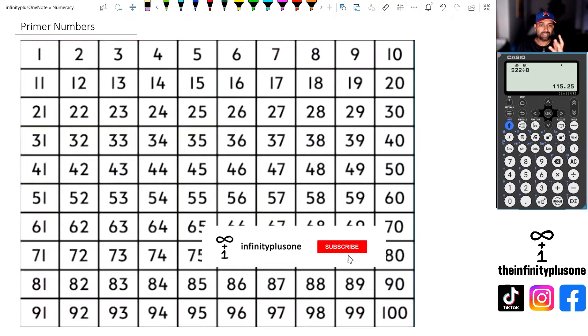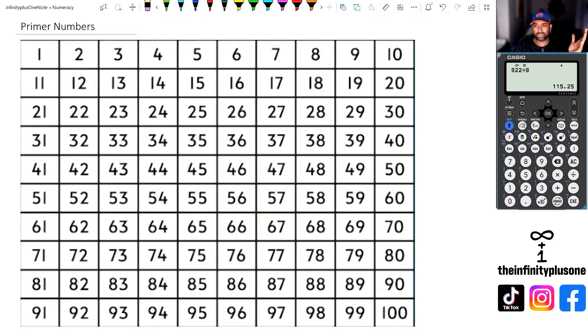All right, so what is a prime number? A prime number is a number that's divisible by one and the number itself. If you think about two, two has factors of one and two. It can be divided by one and it can be divided by the number itself, which is two. Therefore, two is a prime number.